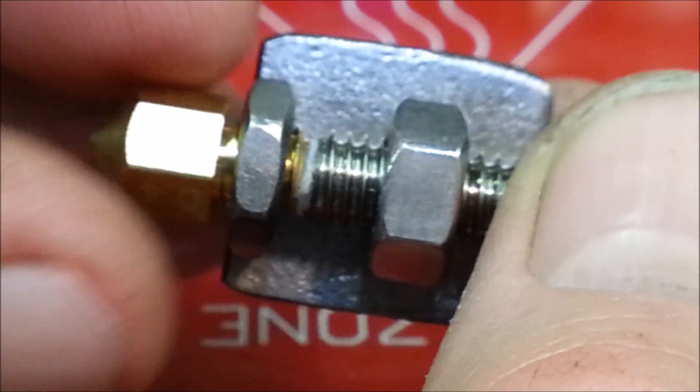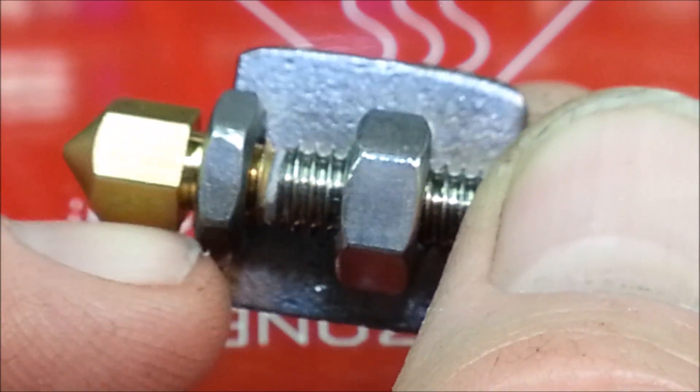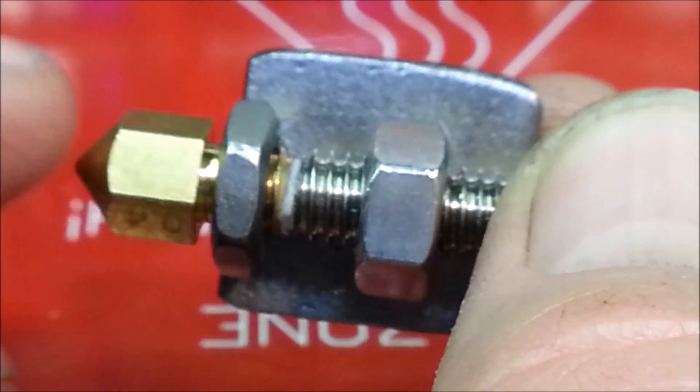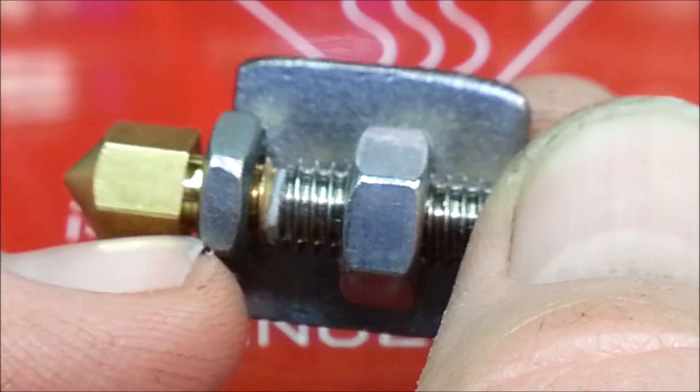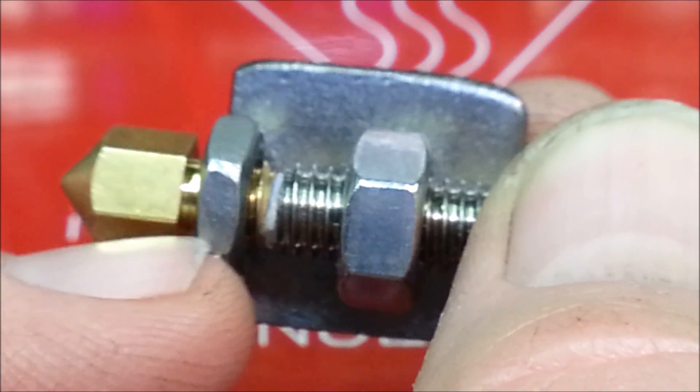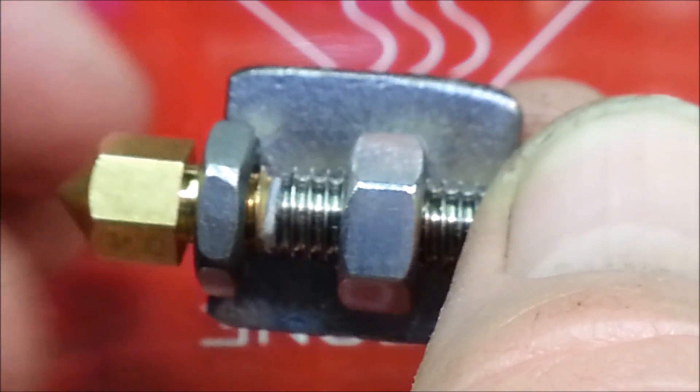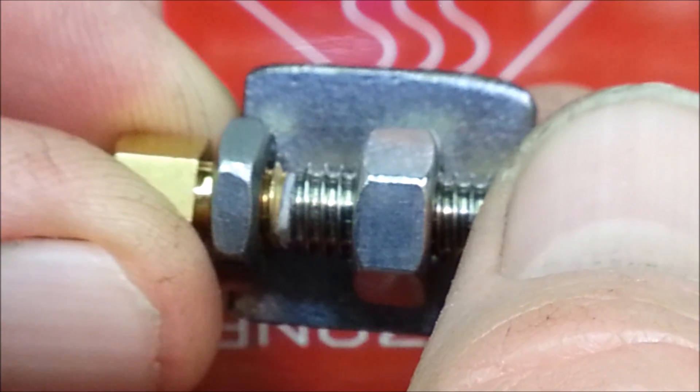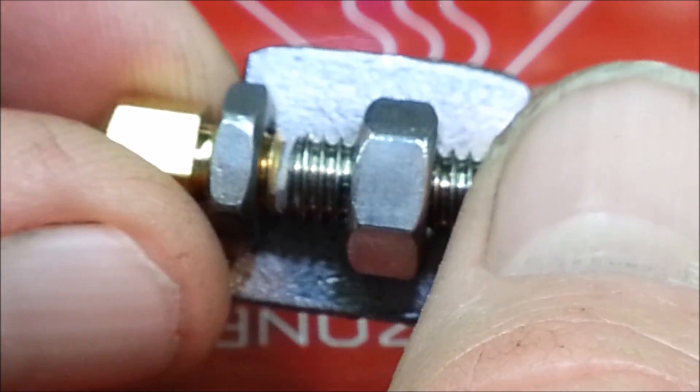I heard some people say that you wrap the threads in Teflon tape. My worry about doing that, especially with the nozzle, is that it would insulate it from the heat block. So I would think that would cause an issue as far as extruding the plastic.